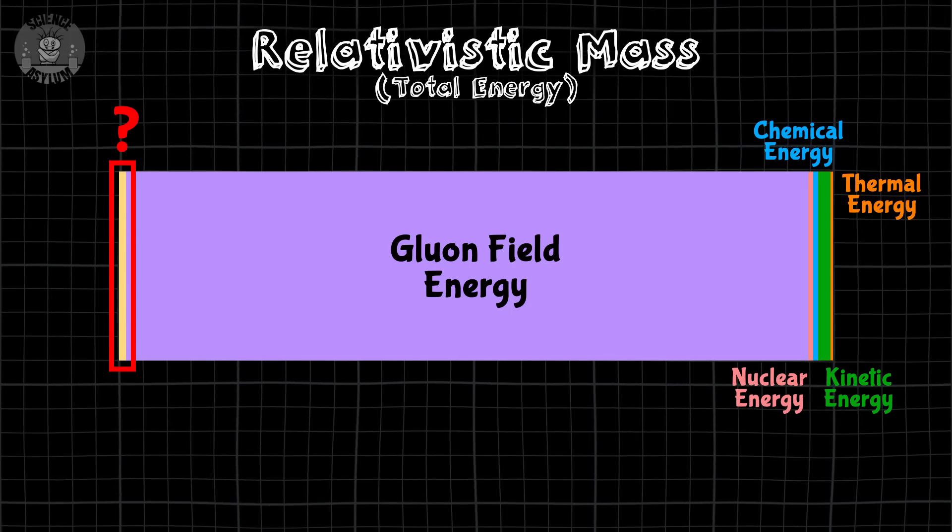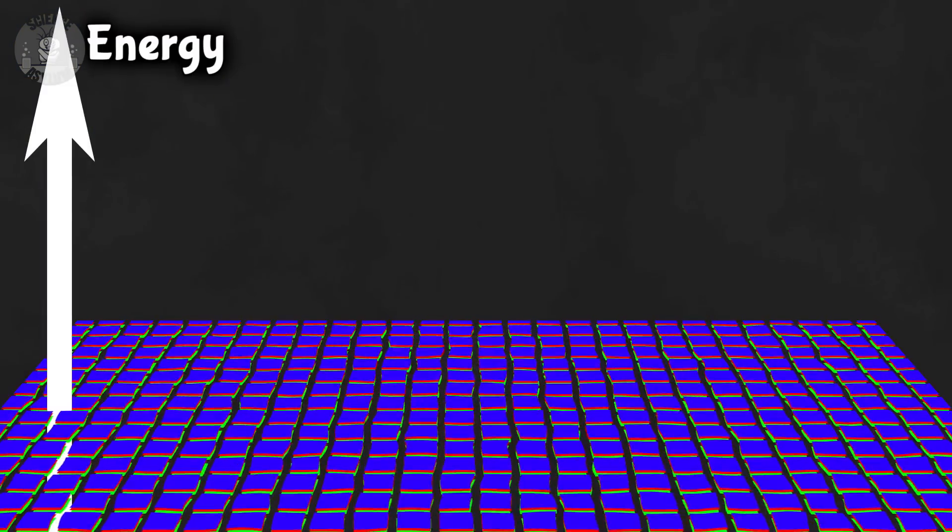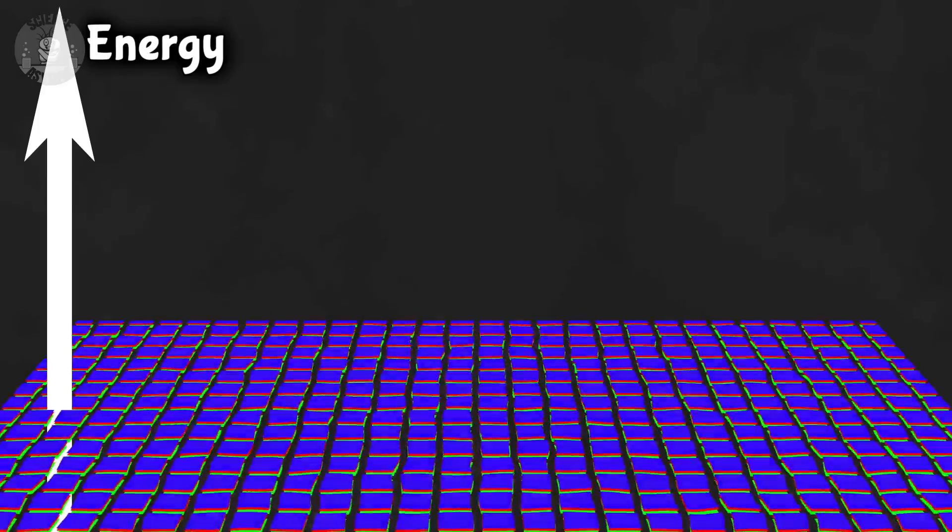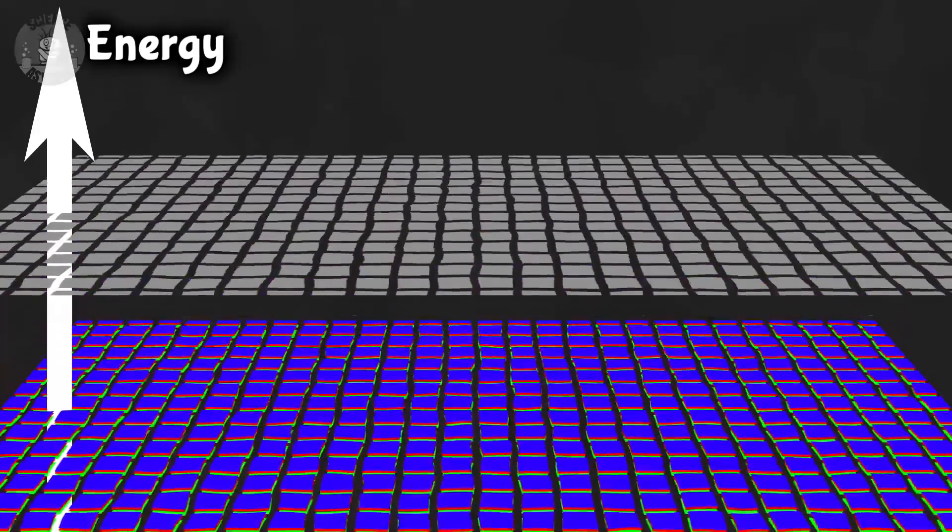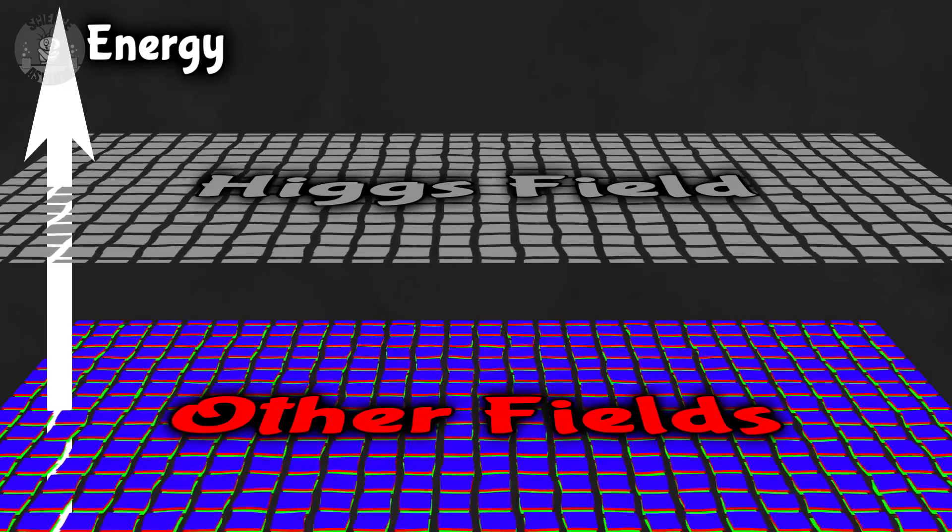But what about this remaining 1%? That's just the rest mass of all these particles over here. According to quantum field theory, those particles have mass due to an interaction with something called the Higgs field. See, most quantum fields hover around zero energy. The Higgs field hovers a little higher than the others. Its equilibrium is a non-zero energy that fills all space.